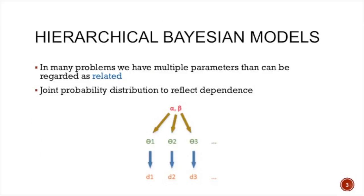In the hierarchical part, in many problems it is the case that you have many parameters that you want to estimate, and these parameters are often related with each other. For example, you have parameters theta 1, 2, and so on, each of which produces an observation. At a higher level, these parameters are related with each other — in the Bayesian sense, we assume they are coming from the same population, parameterized by alpha and beta. You can see a two-level model here. You can have all sorts of structures with different levels and how they interact with each other.